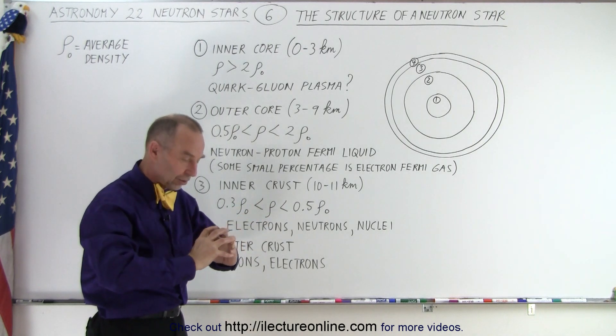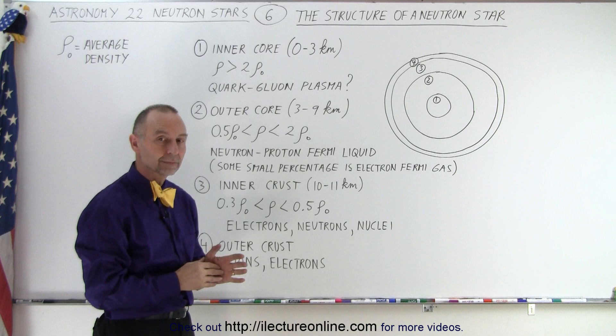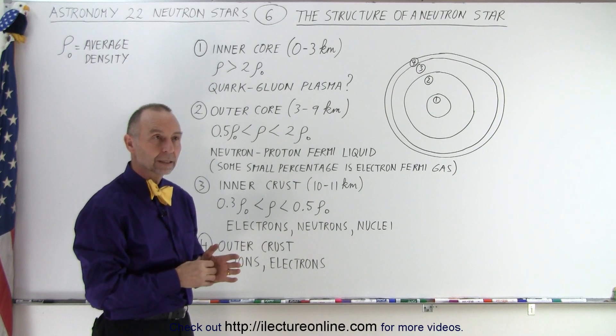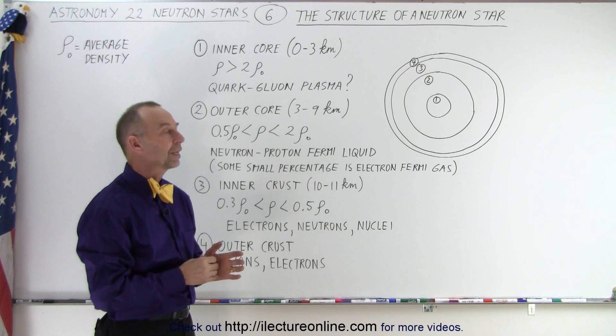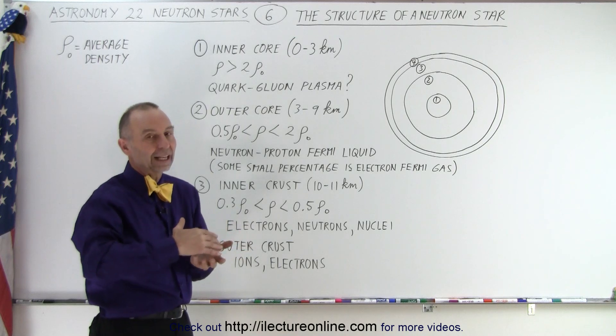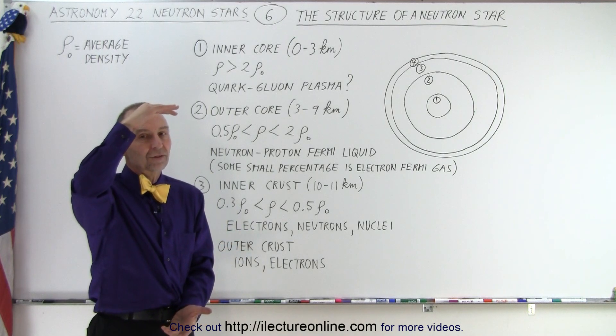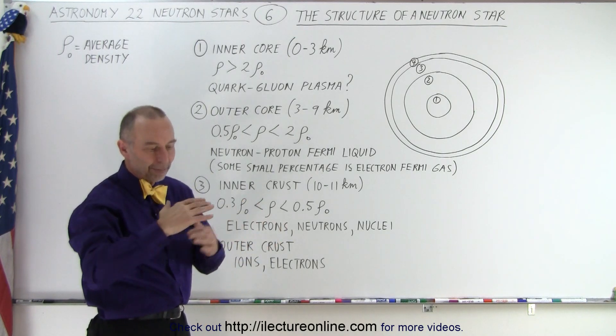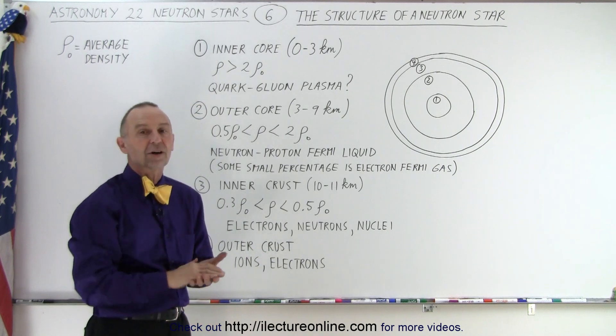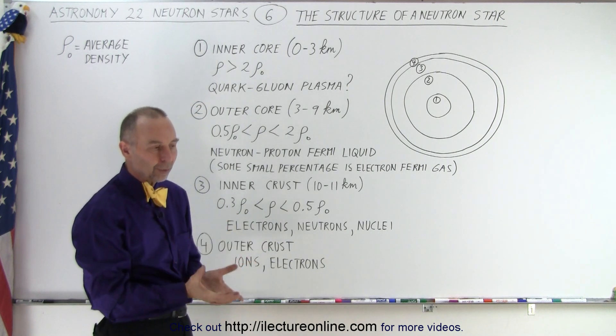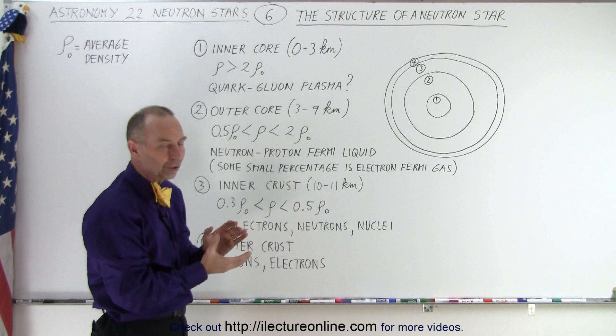The density means it's packed closer together. Yeah, but the whole star is smaller, so everything else is smaller. Oh, because of that? Well, the result of it is that it's 20 kilometers across. If it wasn't so densely packed, obviously, it would be a bigger star.